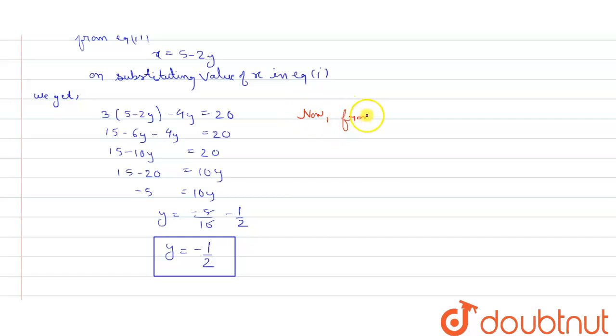Now from x equals to 5 minus 2y, we will substitute the value of y in this and we will get x equals to 5 minus 2 multiplied by minus 1 by 2. This will give us x equals to 5, this is minus